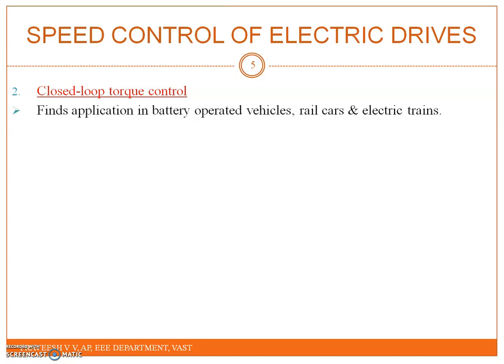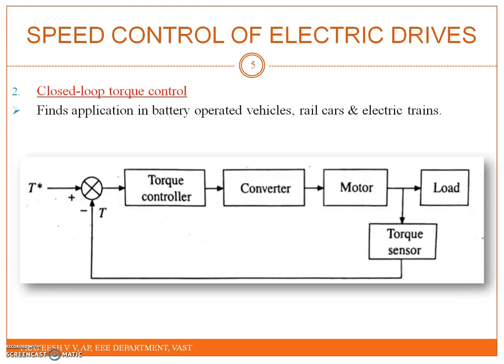Closed loop torque control finds applications in battery operated vehicles, rail cars, electric trains, etc. The block diagram shows the current sensor and torque sensor on the shaft.